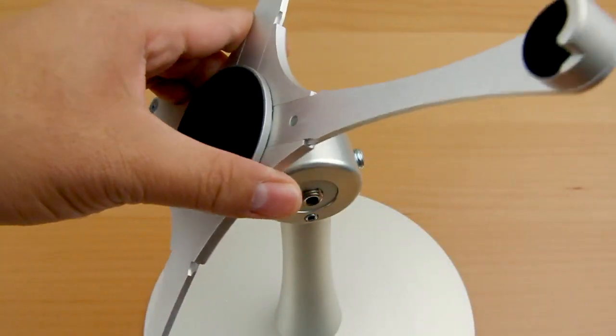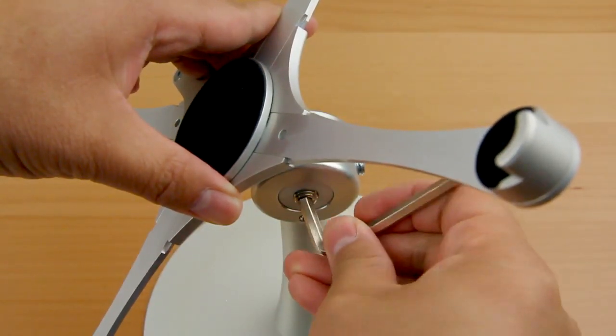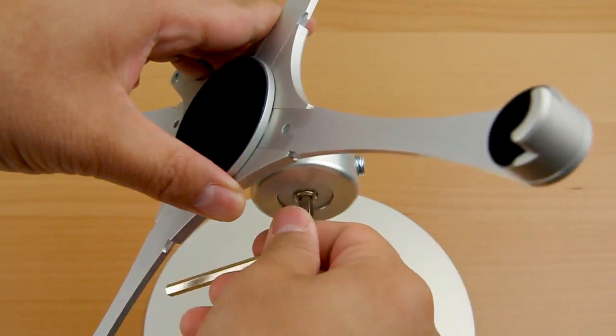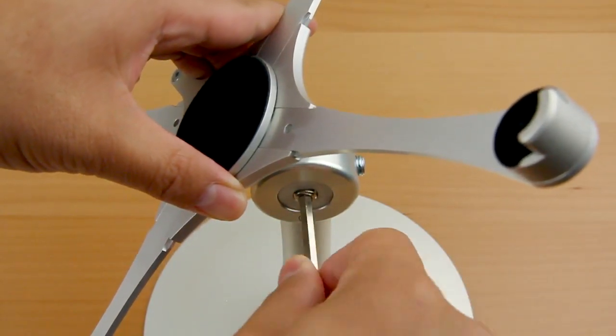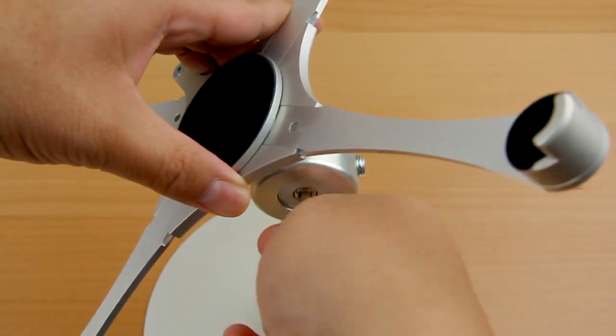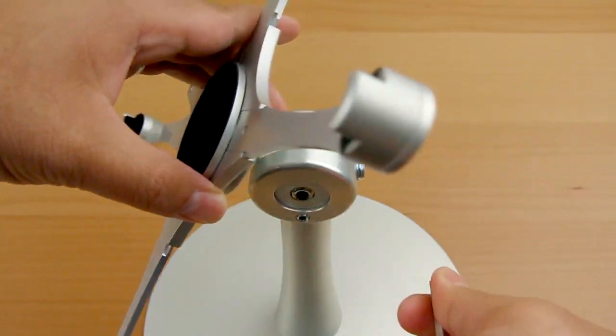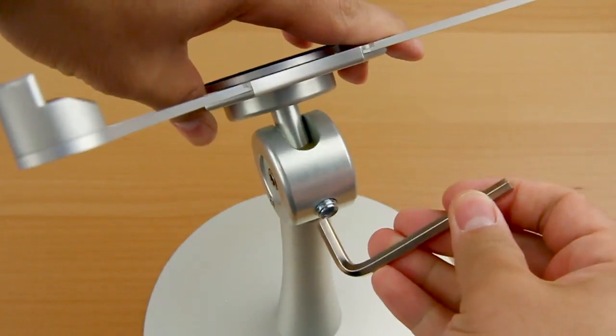Installation of the cradle into the post is relatively easy. There's two hex bolts on either side. One controls the angle adjustment and one controls the tension with regards to adjusting that angle into the post itself.